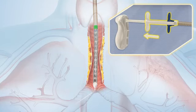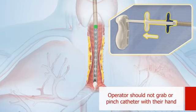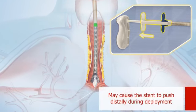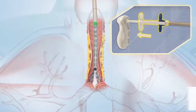The outer sheath is slowly retracted to begin deployment. The operator should not grab or pinch the catheter with their hand as this may cause the stent to push distally during deployment.